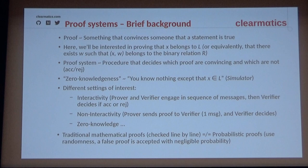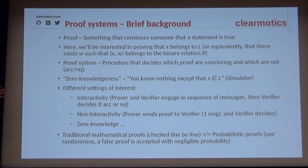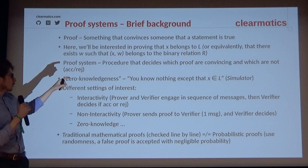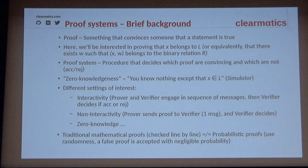A proof system is a set of procedures that enables you to generate proofs and define the rules of acceptance, telling the verifier when to reject. You can be interested in interactive settings — as a verifier, you ask questions to the prover, receive answers, then decide whether to accept. Or in the non-interactive setting, the prover just sends you a proof and you decide on your own. The zero-knowledge property means that as a verifier, you learn nothing except that X belongs to the language — the prover doesn't reveal private information.